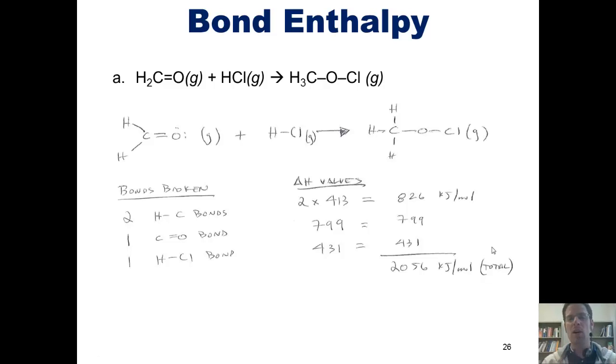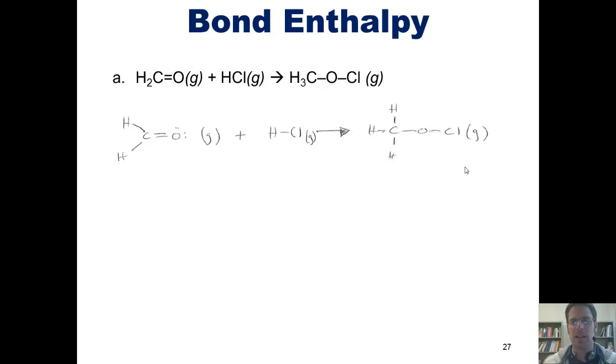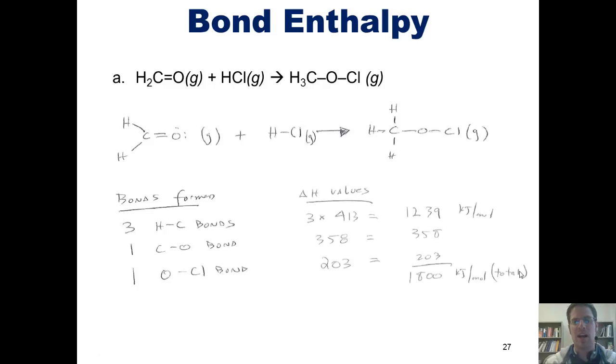Thus, in this process, if I broke all of those bonds, this is how much energy would be involved. I now go to the right side of the equation. Looking at my Lewis structure up here, you can see that the right side of the equation our product has three total hydrogen-carbon single bonds, one carbon-oxygen single bond, and one oxygen-chlorine single bond. If I go back to our table from earlier, I can see the values in kilojoules per mole of each of those bonds. For instance, a hydrogen-carbon single bond is worth 413 kilojoules per mole because there are three of them, those combined come to 1,239 kJs per mole. I then add the additional values shown here and come up with a total of 1,800 total kilojoules per mole of energy involved in forming the compound shown here on the right side of the equation.